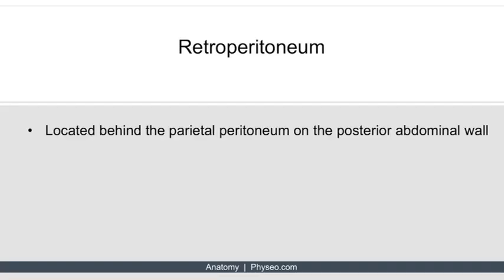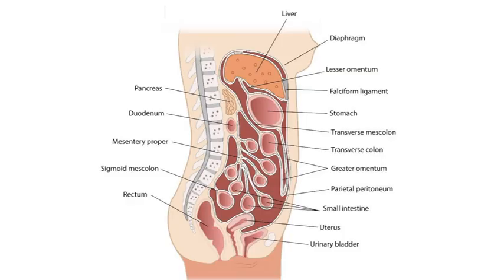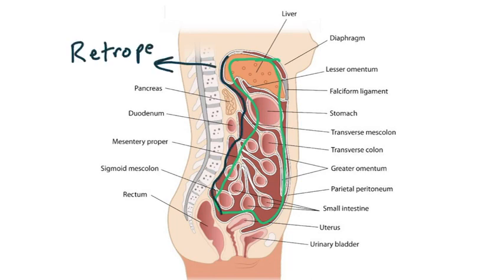The last topic is the retroperitoneum. This is located behind the parietal peritoneum on the posterior abdominal wall. Going back to the sagittal image, we can see all the intraperitoneal structures — the intestinal structures, the liver, and all the mesentery. Anything behind this cavity is retroperitoneal.